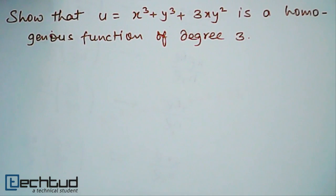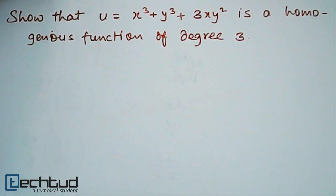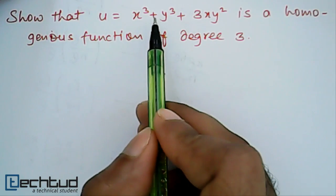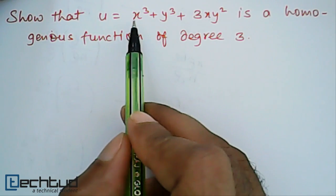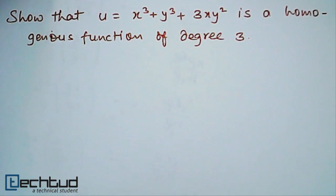Hello everyone, welcome back to TechEd.com. In this lecture we will illustrate that Euler's theorem is working. We have a problem saying that we should show that this function u, which is a function of two independent variables x and y, is a homogeneous function of degree 3.